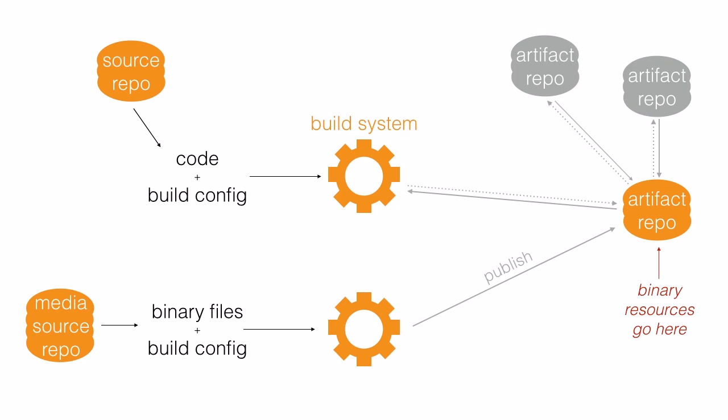And binary files — media, sounds and images — are usually much more separable than our code is. If the repository we're storing our media in grows too big, we should be able to split it or prune it much more easily than we could with our source code repository.